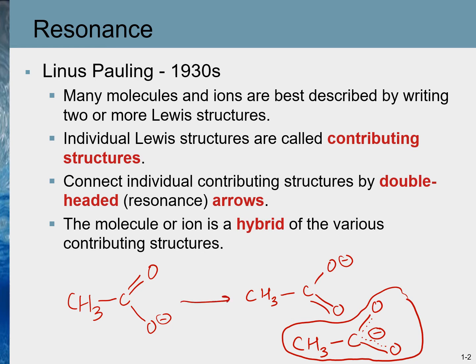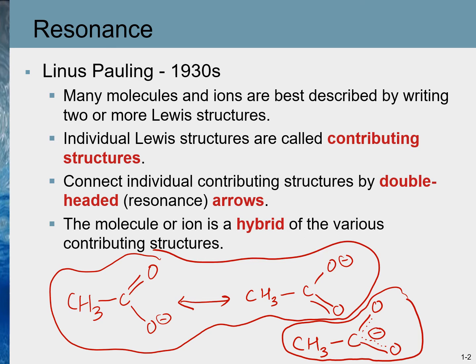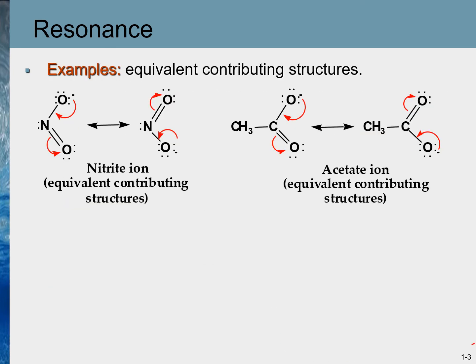The real molecule is known as the resonance hybrid structure. The resonance contributing structures are connected by a double-headed arrow. We represent the contributing structures in this format. Examples of resonance contributing structures of nitrite ion and acetate ion are shown here, separated by a double-headed arrow.